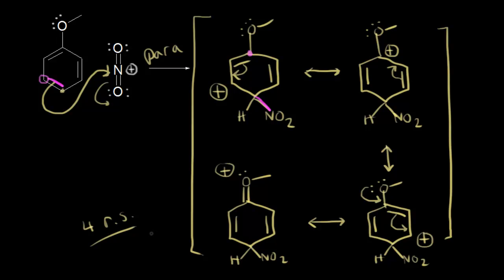The ortho attack had four resonance structures and the para attack also has four resonance structures. This helps explain why the methoxy substituent functions as an ortho/para director: showing an ortho or para attack lets you draw a total of four resonance structures, which stabilizes the sigma complex more than a meta attack. That's the reason for the regiochemistry we see in the nitration of methoxybenzene.